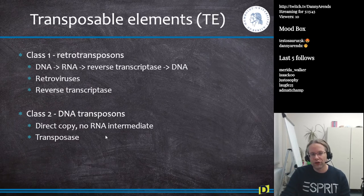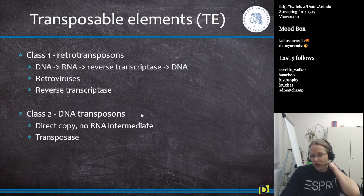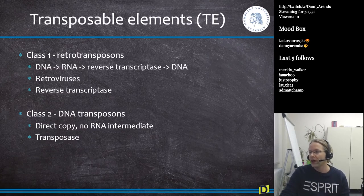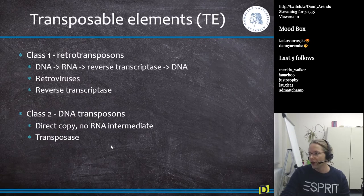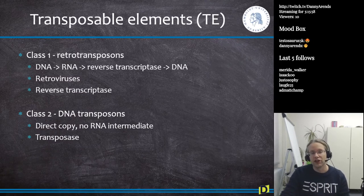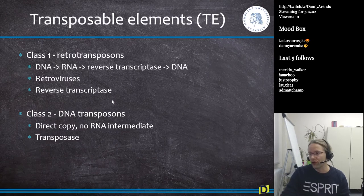Class two are DNA transposons, which make direct copies of themselves with no RNA intermediate involved. They use a protein called transposase, allowing them to jump around in the genome. So you can divide transposons into class one and class two.